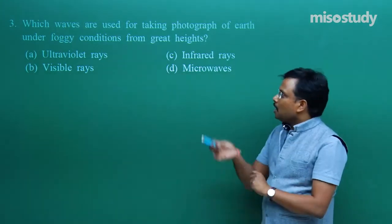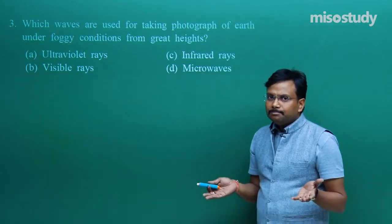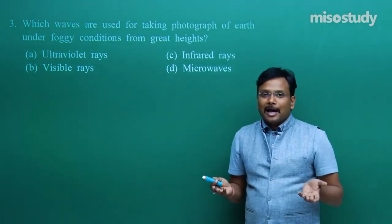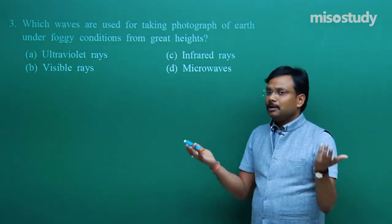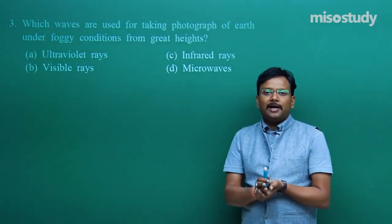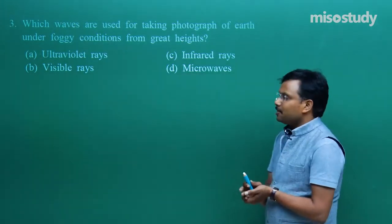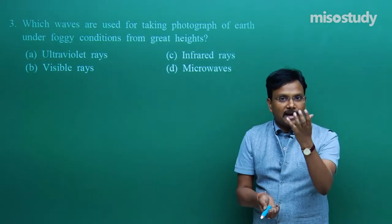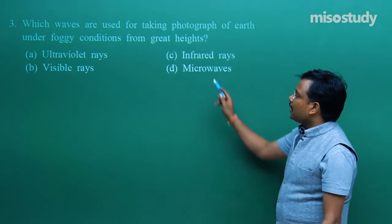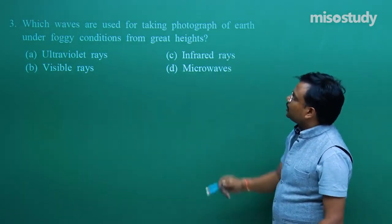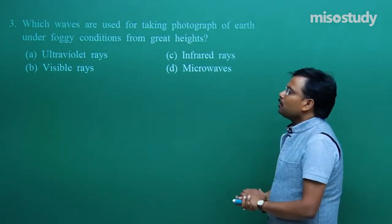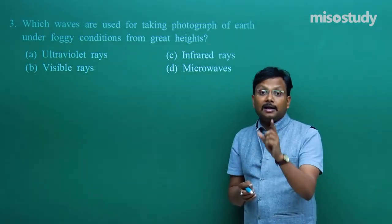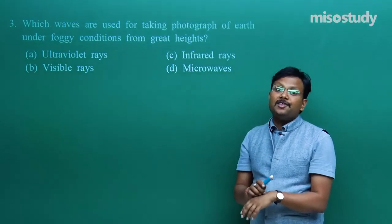Ultraviolet rays cannot be used for photography in foggy conditions. Visible rays — even in foggy conditions you cannot see anything, so a normal camera will only record fog. Microwaves are used for cooking and heating due to their large wavelength and lower energy. IR sensing is associated with remote sensing satellites. So infrared photography is the correct option for taking photographs of Earth under foggy conditions. This is also how you eliminate wrong options using understanding of radiation properties.